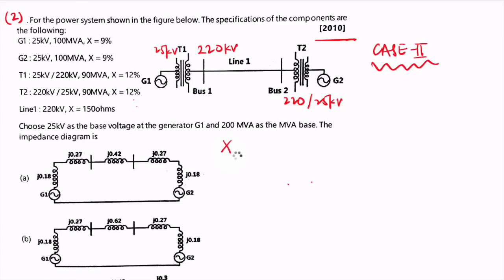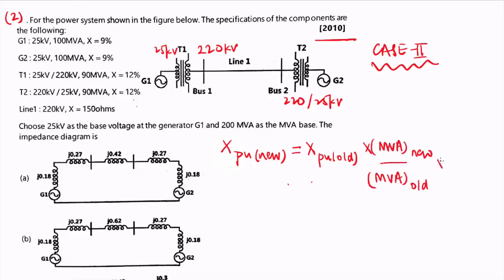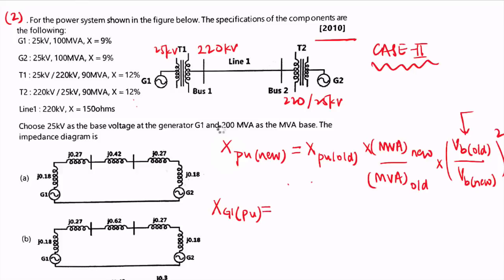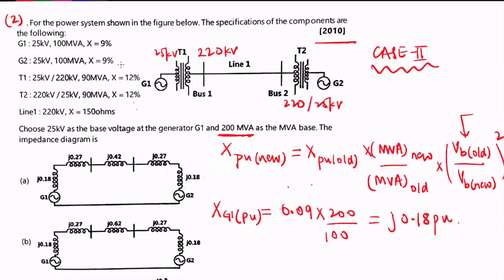Using the formula X_new (pu) = X_old (pu) × (MVA_new / MVA_old) × (V_base_old / V_base_new)², and since base voltages are the same the ratio is 1. So Xg1 (pu) at 200 MVA = 0.09 × (200 / 100) = j0.18 pu. G2 has the same parameters, so Xg2 = j0.18 pu as well.